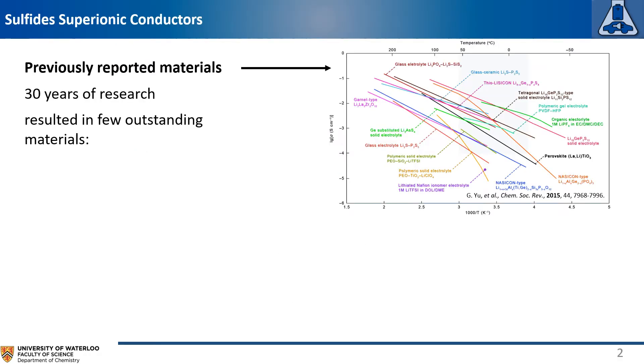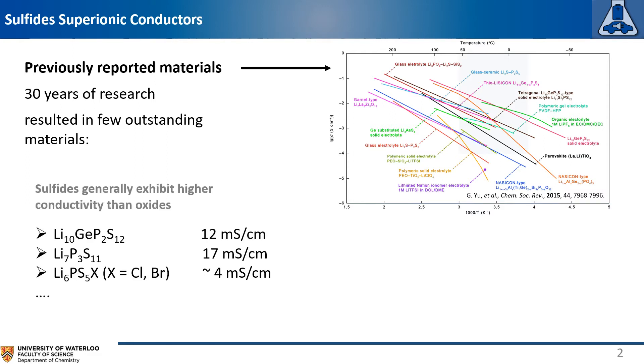Over the last 30 years of research, only a few outstanding materials have emerged. Among them, sulfide materials generally exhibit high ionic conductivity. A few examples like LGPS and lithium-711 accept high ionic conductivity, even above the ionic conductivity of traditional organic liquid electrolytes. Argyrodite materials accept somewhat slightly lower ionic conductivity.